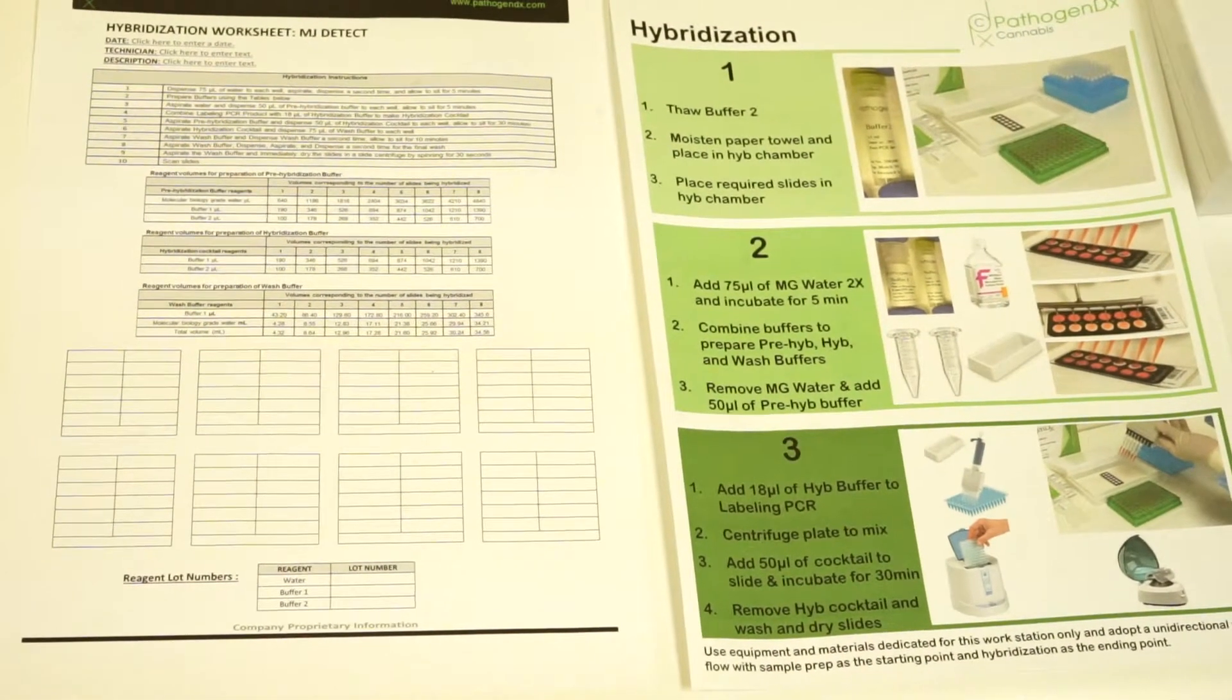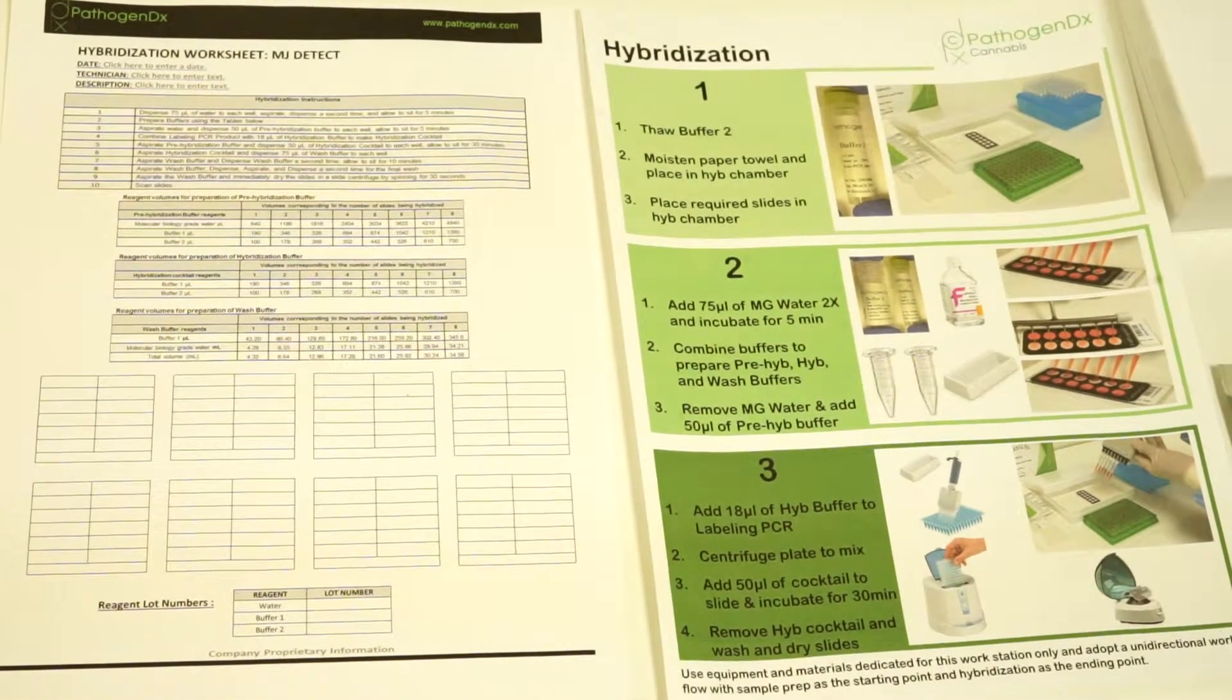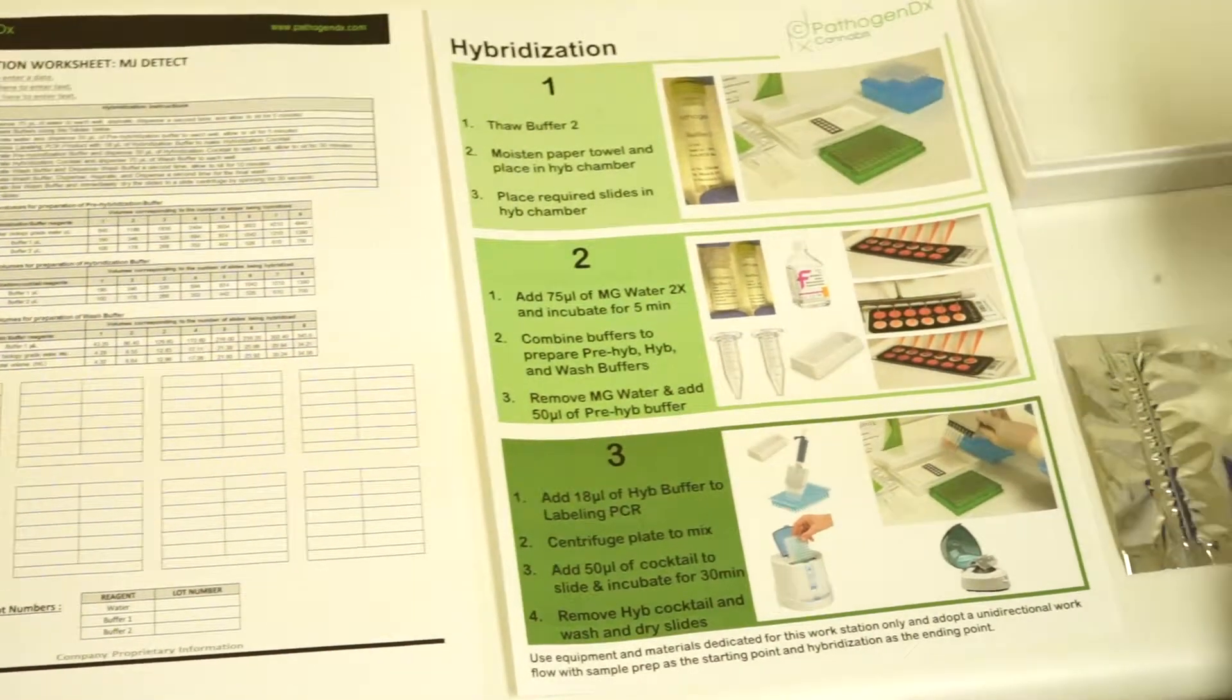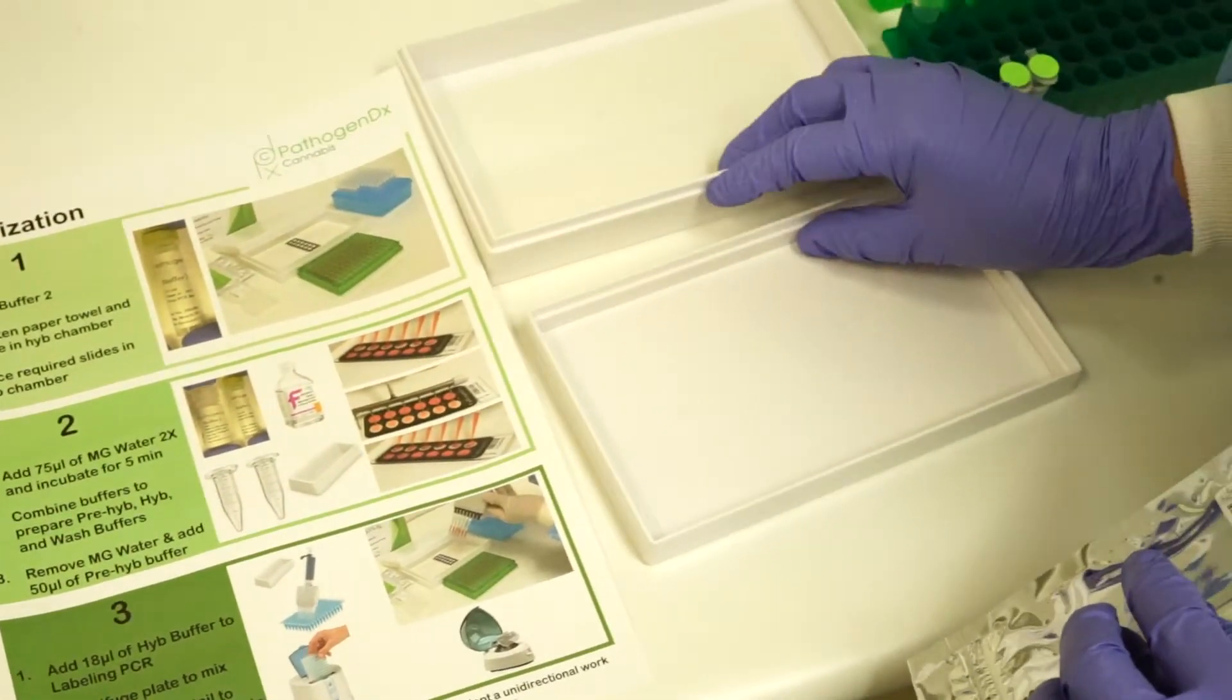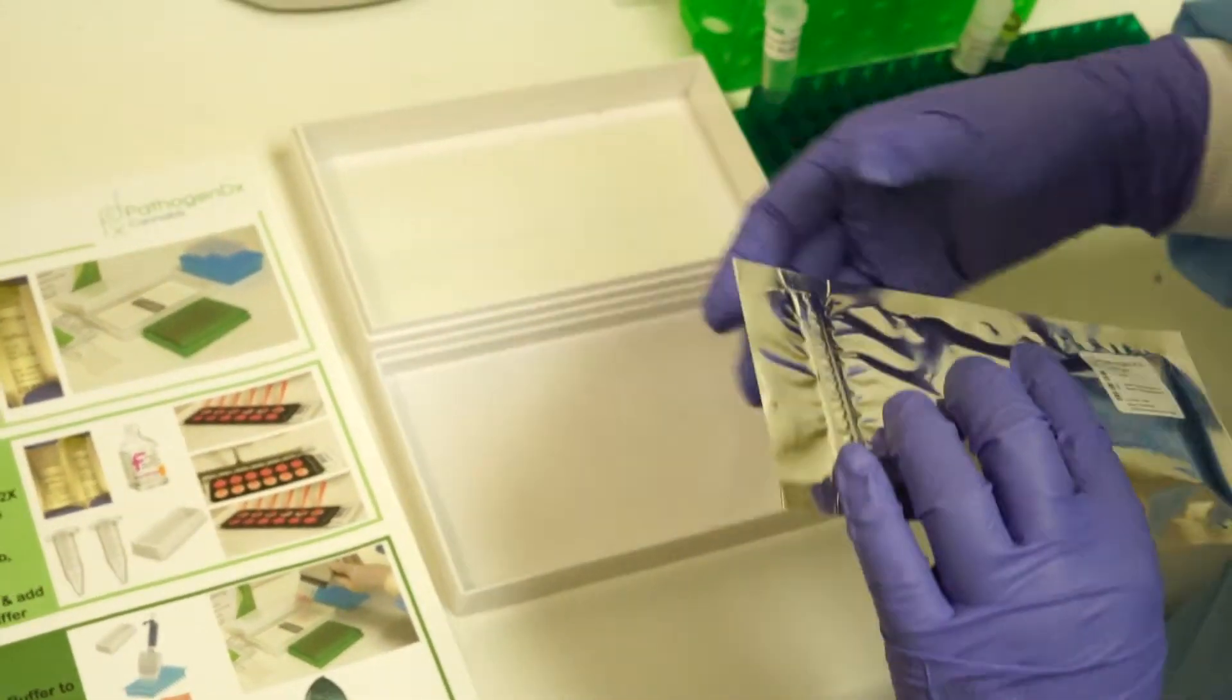Once the labeling PCR is complete, hybridization can begin. Start by making sure your hybridization chamber has a moistened paper towel.